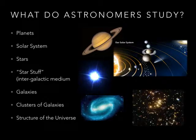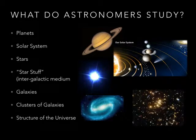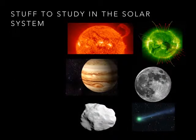They also study the asteroid belt and the Kuiper belt. The asteroid belt is here, and out further is the Kuiper belt. They think that's where comets come from — exactly right.